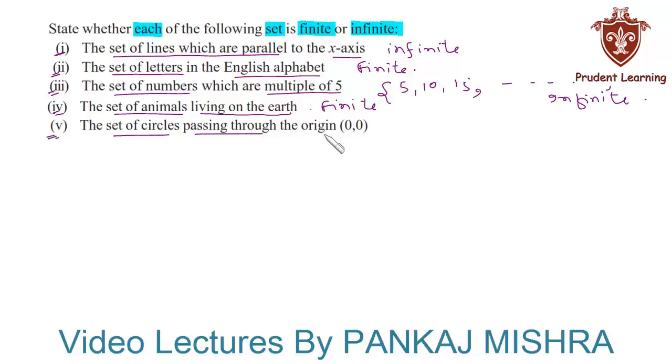Now let us see the last section. The set of circles passing through the origin. Again, if you have a basic understanding of geometry, then you know that infinite number of circles can be drawn through the origin. Hence the given set is an infinite set. So this completes our solution.